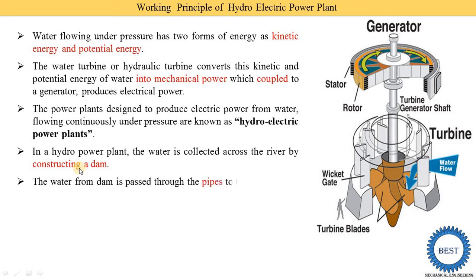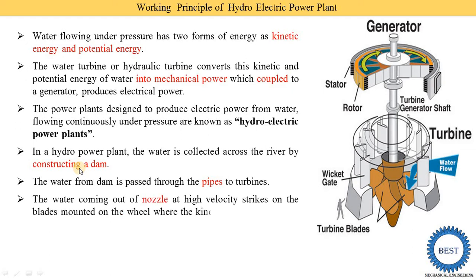The stored water is supplied to the turbine by using a pipe called the penstock. The penstock connects the dam and the turbine, supplying water from the dam to the turbine. At the end of the penstock, we install a nozzle. The function of the nozzle is to convert pressure energy into kinetic energy.